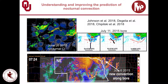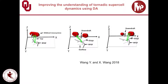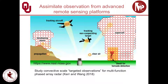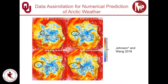We are also using data assimilation to understand storm scale and mesoscale dynamics. For example, we participated in the PECAN field campaign to understand nocturnal convections, using newly collected observations and data assimilation to study nocturnal convection initiation, bore cases, and bore-convection interaction. We are also using data assimilation as a tool to understand the dynamics of tornadic supercells. With new technology, we expect more advanced remote sensing platforms to emerge, so one of our goals is to study how to best assimilate future observations using observation system simulation experiments to improve convective scale numerical prediction. We are also very interested in using data assimilation to improve understanding and prediction of weather in the Arctic.